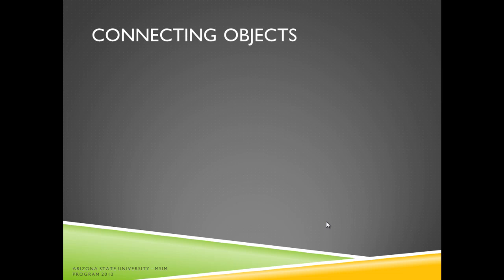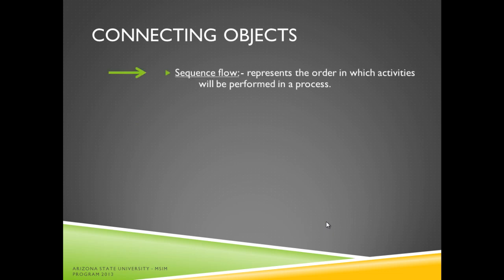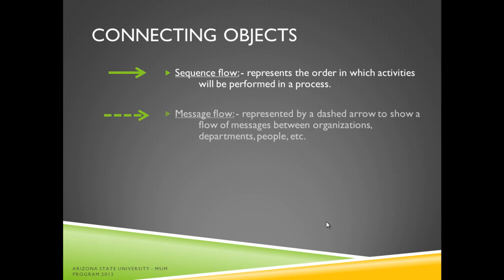The symbols under connecting objects consist of the following. An arrow represents a sequence flow, which is the order of activities that will be performed in a process. A dashed arrow represents a message flow, which shows a flow of messages between organizations, departments, people, and other items.